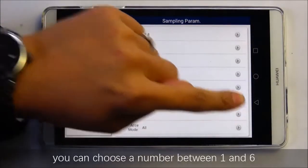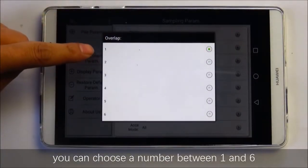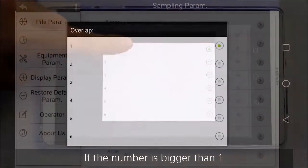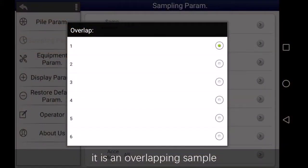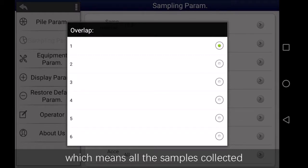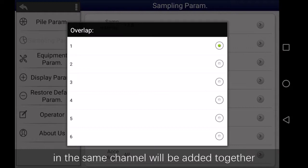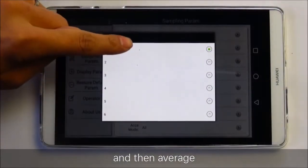Overlap: You can choose a number between 1 and 6. If the number is bigger than 1, it is an overlapping sample, which means all the samples collected in the same channel will be added together and then averaged.